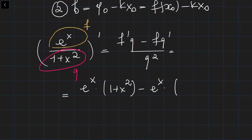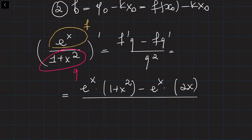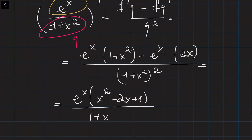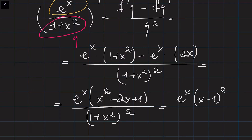The derivative of g is: the derivative of 1 is 0, plus the derivative of x squared which is 2x. This is all divided by g squared, which is (1 plus x squared) squared. Then we factor e^x out of the brackets and we get e^x times (x² − 2x + 1) divided by (1 + x²)². Note that x² − 2x + 1 can be written as (x − 1)², so the derivative becomes e^x(x−1)² divided by (1 + x²)².